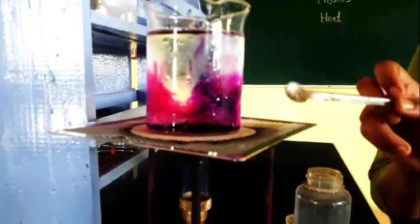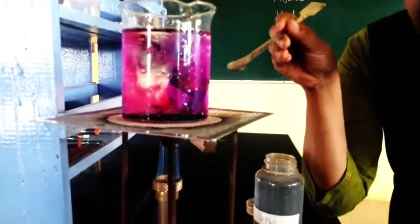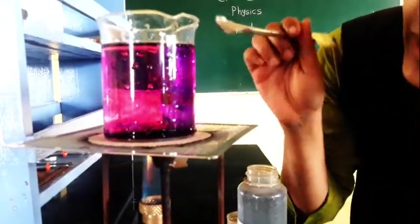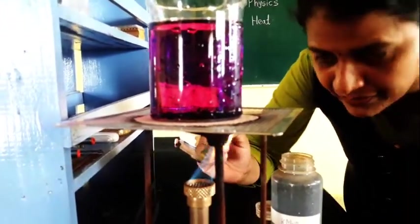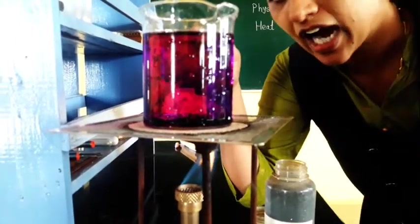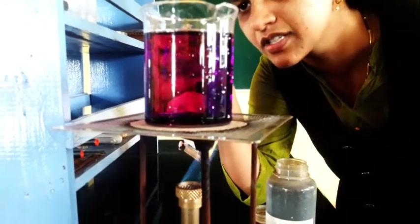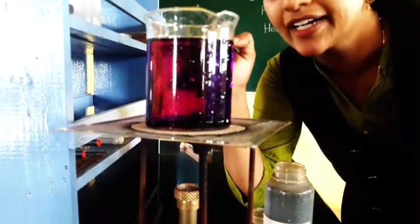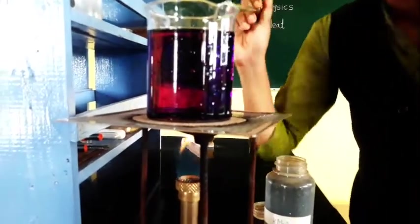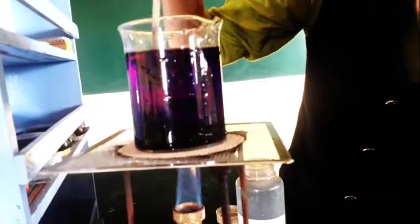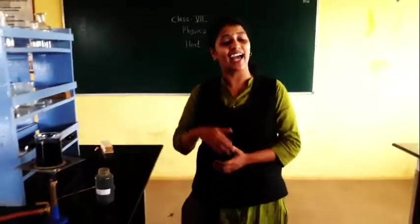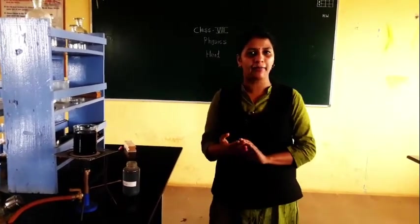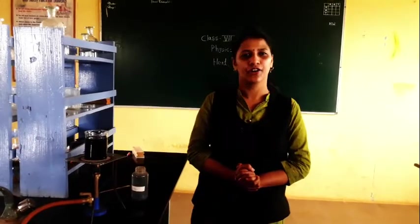Can you see the waves coming up? This is the actual process of convection — the molecules are actually moving. As the heat is provided, the bottom part gets heated first. It becomes lighter and moves upward, while the cold water goes downward. You can see the waves of movement in the water. This is how convection takes place in our day-to-day life. I also gave you the example of land breeze and sea breeze. I hope you have understood the video — thank you.